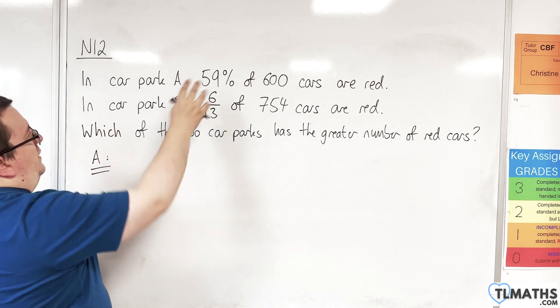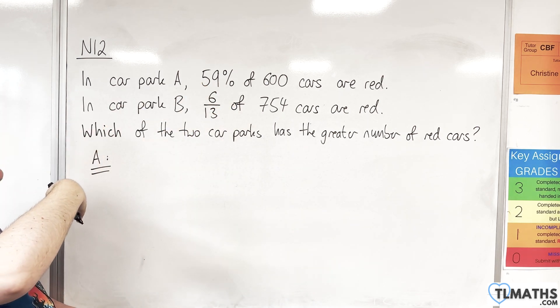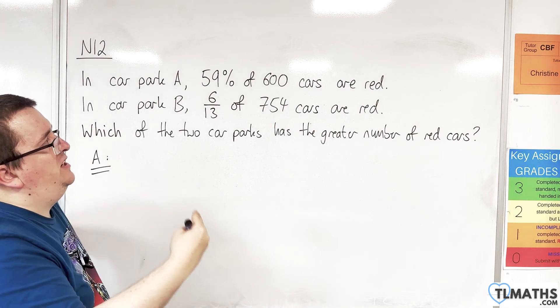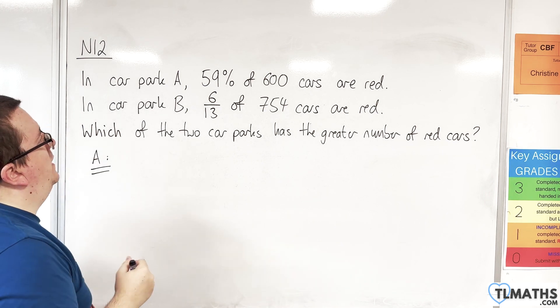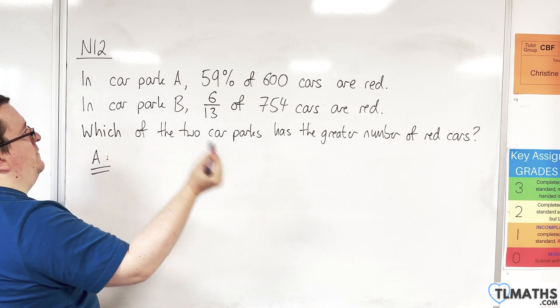This one you could break down relatively easily into 10%, or you could find 60% and take away 1%. I'm just going to go straight in with calculating 0.59 times 600.